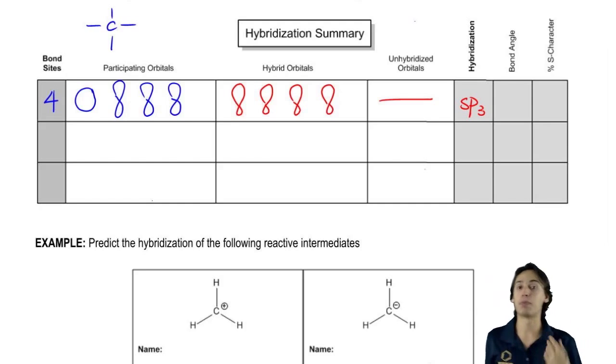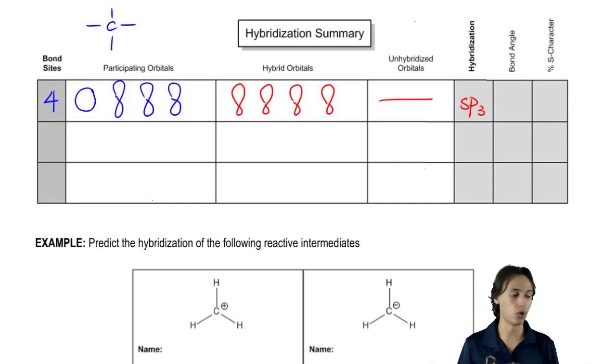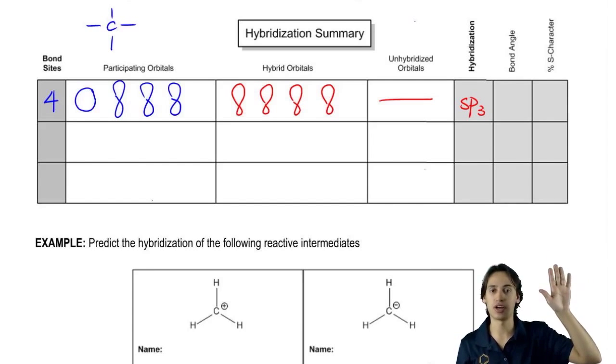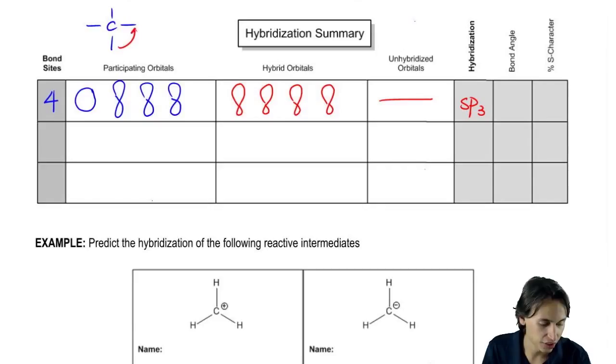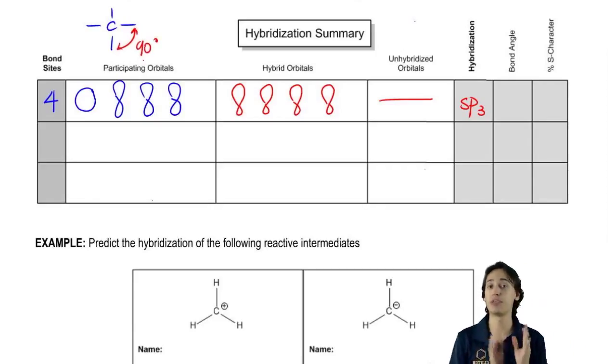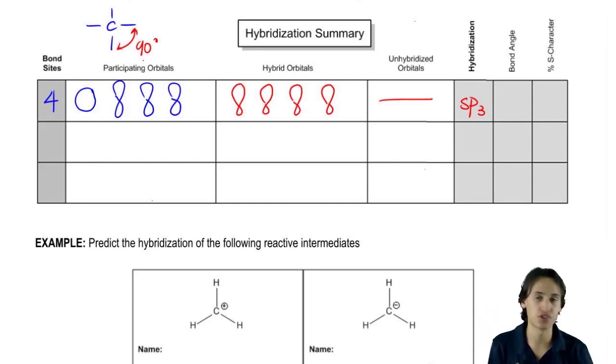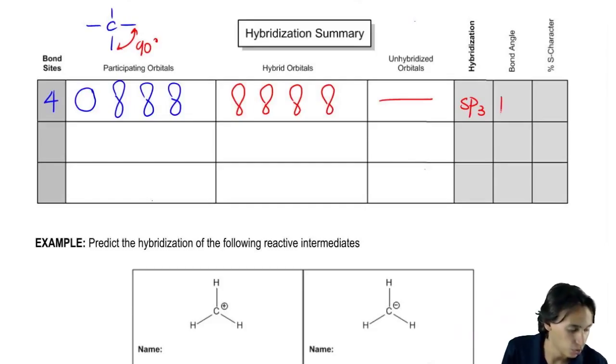Well, now let's talk about the bond angle and the s character because these are common things that professors want you to know about the hybridization. Bond angle has to do with how far apart these four orbitals can get from each other. It turns out that if I was on a two-dimensional space, so let's say that this paper I had four different orbitals on it and I wanted to get them as far apart from each other as possible, the furthest would be 90 degrees. But atoms don't exist on a plane. They don't exist on a page. They actually exist in 3D.